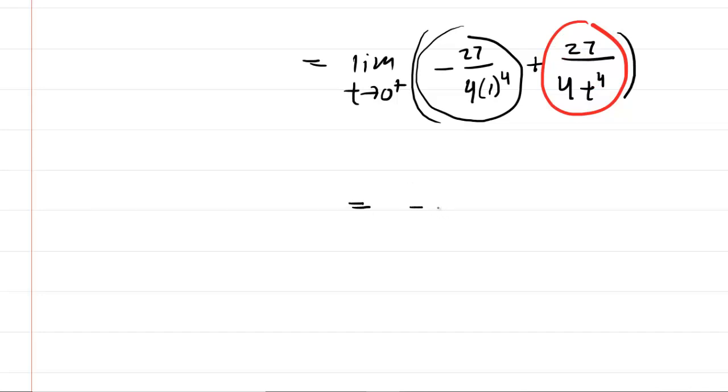The first term is just that negative 27 over four, if you were to simplify it. But again, more importantly, you're going to have plus 27 over four multiplied by zero raised to the power of four. So this is still undefined.